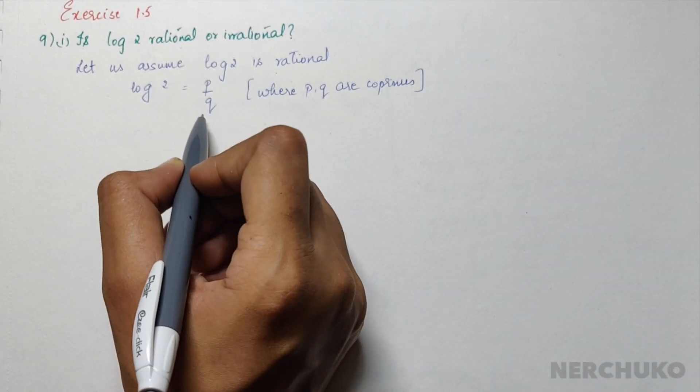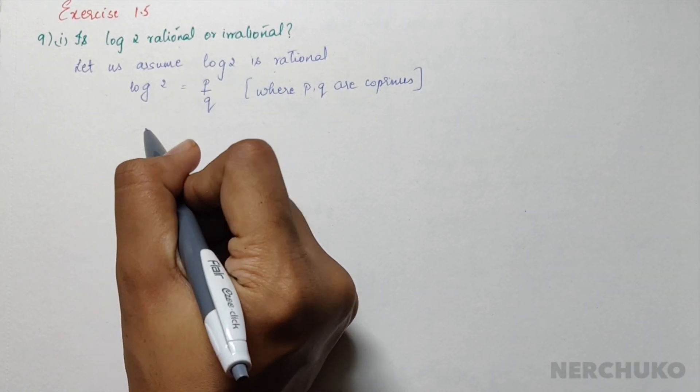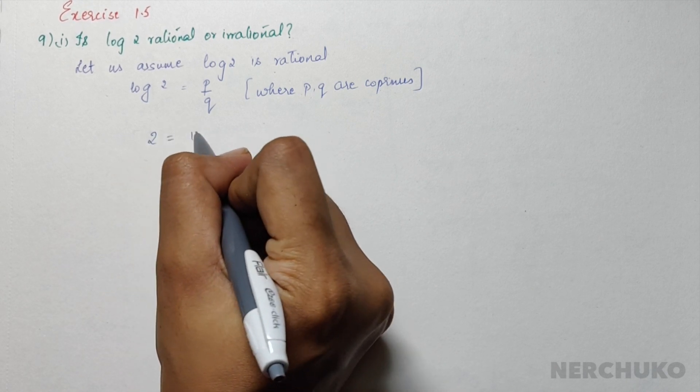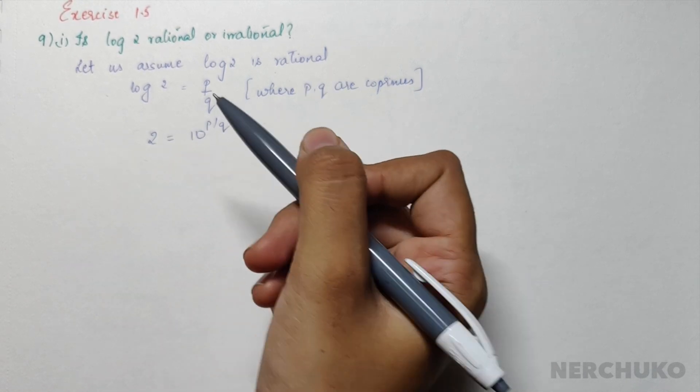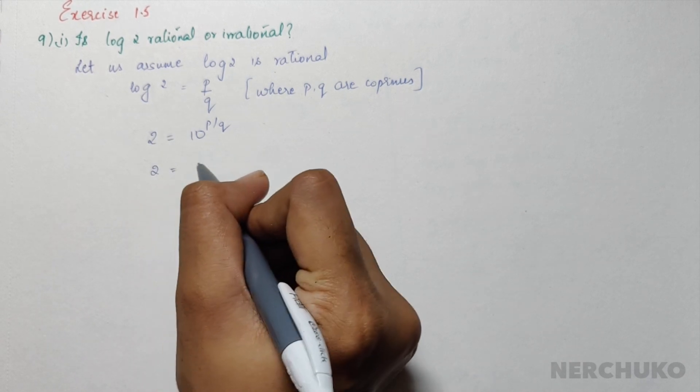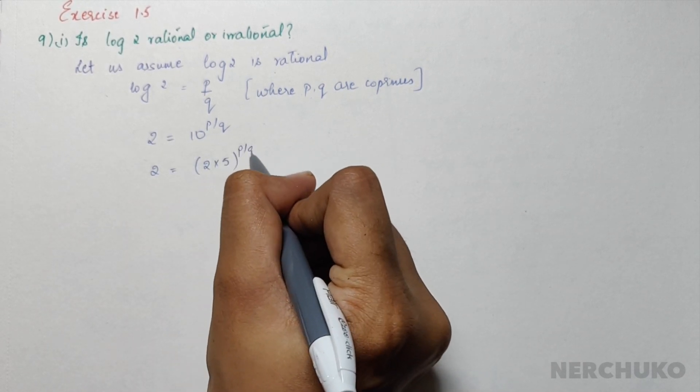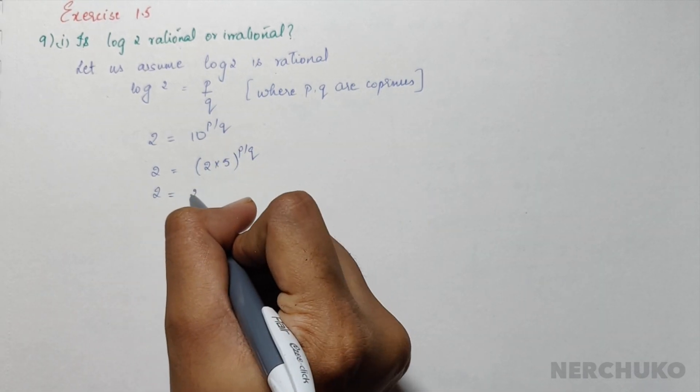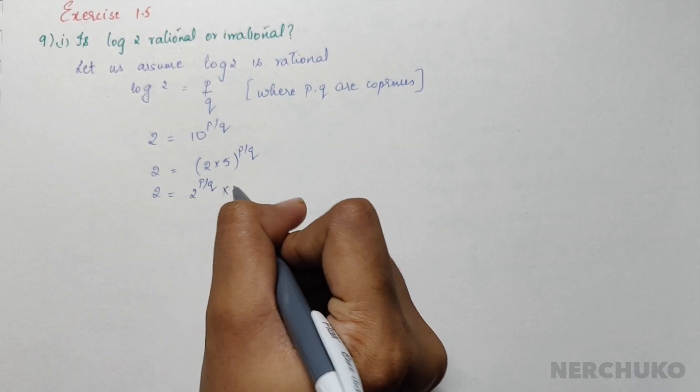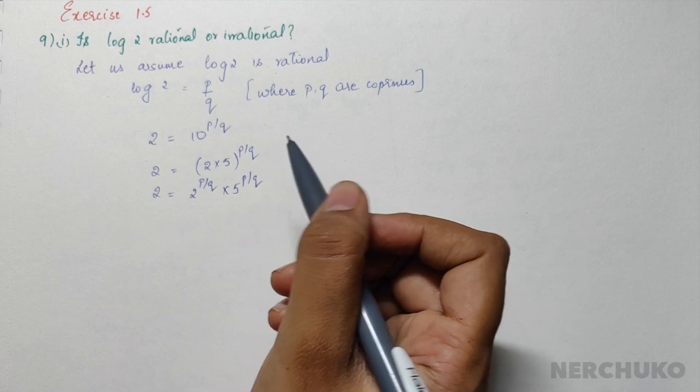Now, if I want to convert this into exponential form, then I would have 2 equal to 10 power p divided by q. And 10 could be written as 2 times 5, so 2 equals 2 power p/q times 5 power p/q.